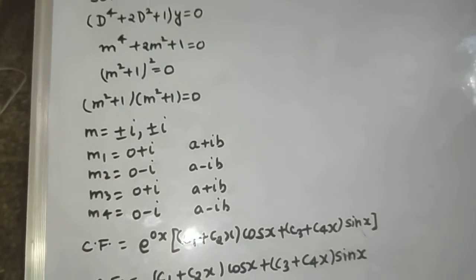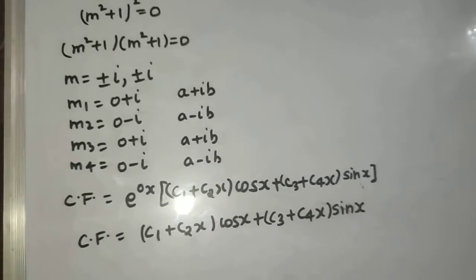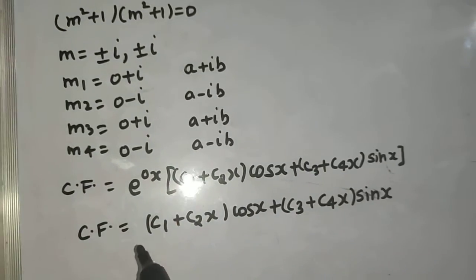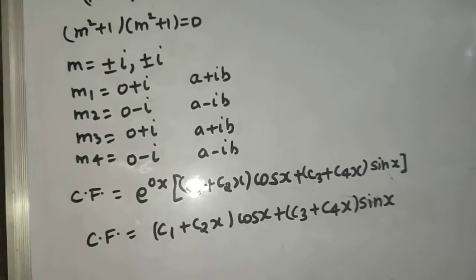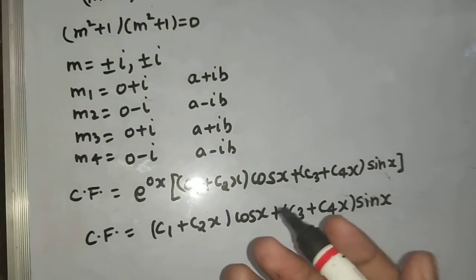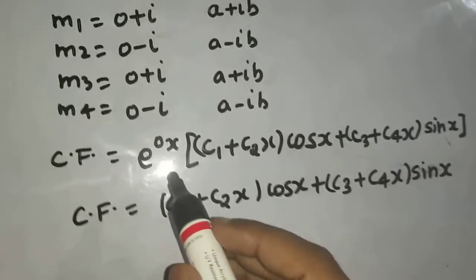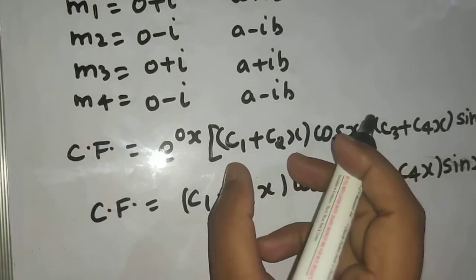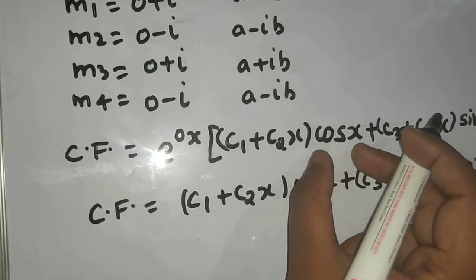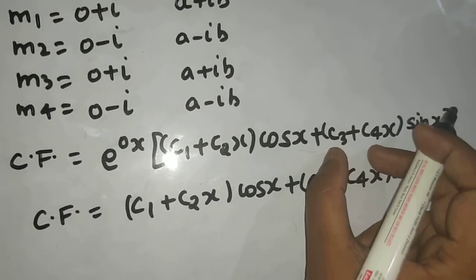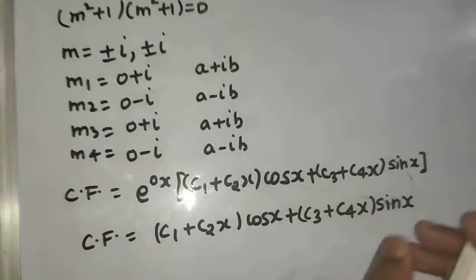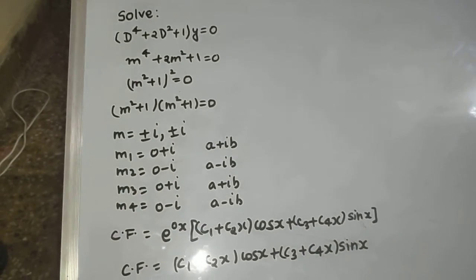Again an easy problem. Only if you know how to write the complementary function in case the complex roots are repeating. So what we do e power ax c1 plus c2x times cos bx plus c3 plus c4x times sin bx. This is the basic funda in this type of questions.